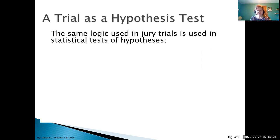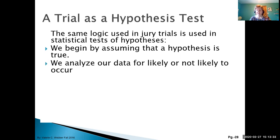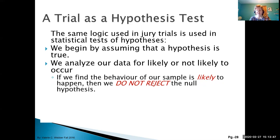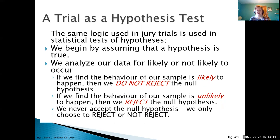The same logic used in jury trials is used in our statistical tests of hypotheses. We assume that our null hypothesis is true. We look at our data and see whether that data is likely to happen — the p-value would be very high — or not likely to happen — the p-value would be very small. If we find the behavior of the sample is likely to happen, we do not reject the null hypothesis; the p-value is large and we fail to reject. If the behavior of our sample is unlikely and the p-value is smaller than the alpha value, then we reject the null hypothesis.